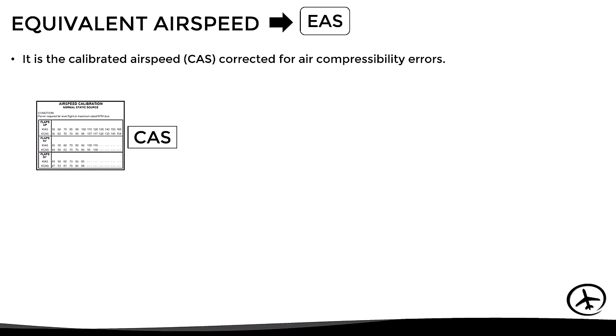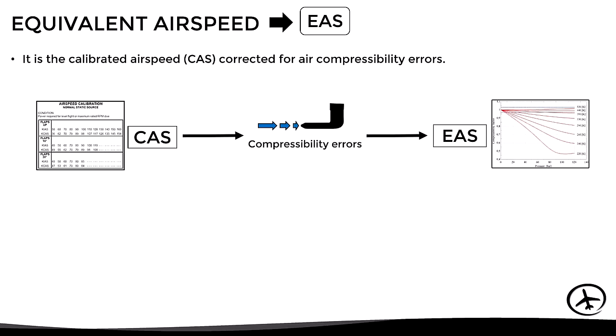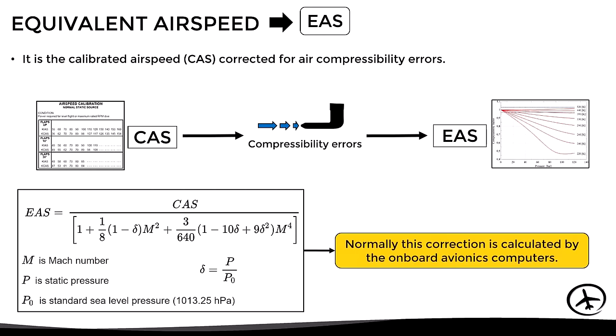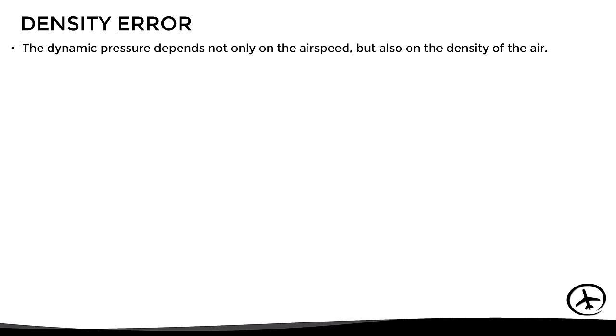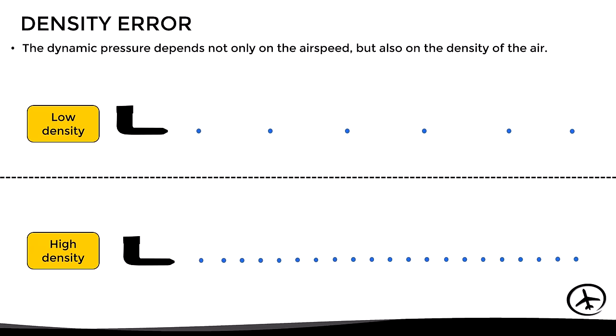If we take the calibrated airspeed and apply the compressibility error correction, we get the equivalent airspeed. This correction is only carried out when flying at high speeds, and calculating it manually can be complex. Normally this correction is automatically calculated in real time by the avionics computers of the aircraft. The next type of error is the density error. Dynamic pressure depends not only on the speed of the aircraft but also on the density of the air, so the airspeed indicator reading depends on both speed and air density.